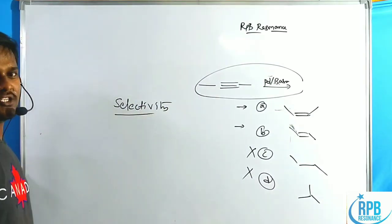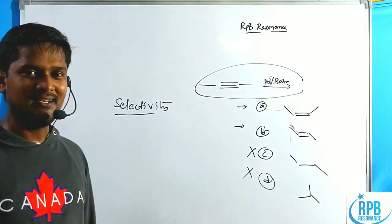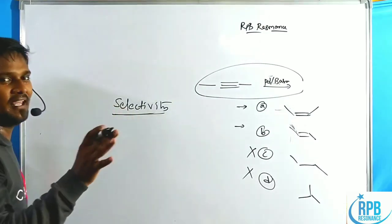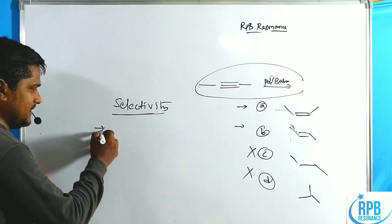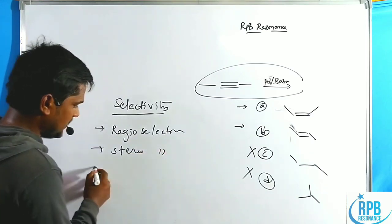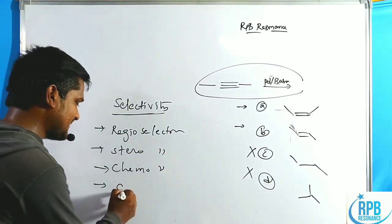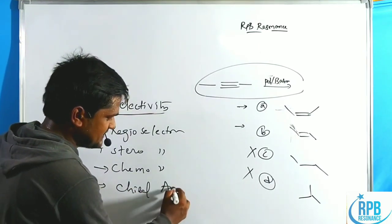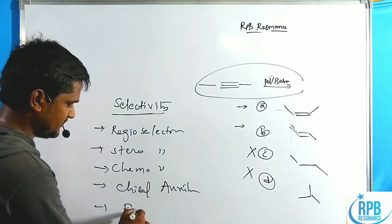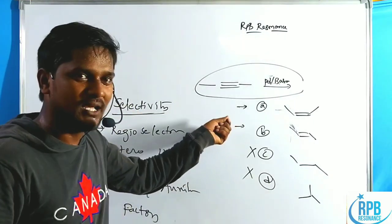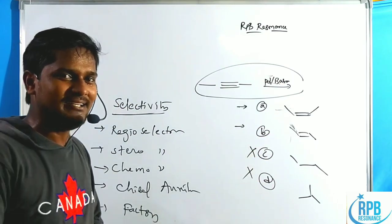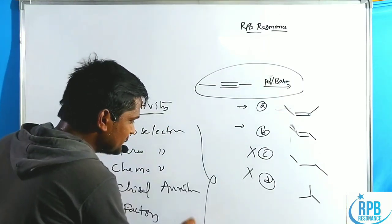When choosing the correct option and eliminating the final third option, we need selectivity. This selectivity may be regio-selectivity, or it may be stereo-selectivity, or it may be chemo-selectivity, or it may be chiral auxiliary selectivity. These are the different factors involved, and this is what we need to eliminate the final option and choose the correct answer.